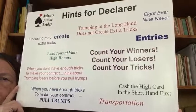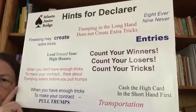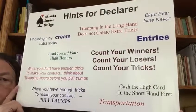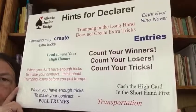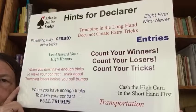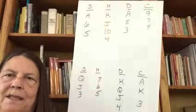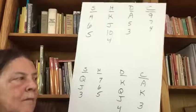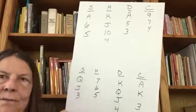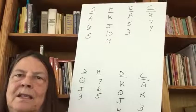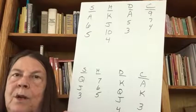This one encompasses finessing, leading towards the high card, and entries. Let's look at this hand and see what we think. Suppose you are in three no trump. The bottom hand is declarer, the top hand is dummy. Let's say that the opening lead was the queen of clubs.